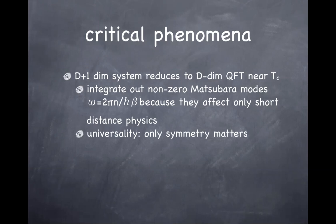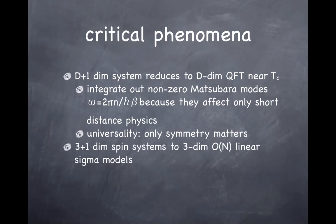There's a sense called universality: as you keep integrating out Matsubara modes, all the parameters in the theory keep changing, but at the end of the day the remaining theory in d dimensions respects the same symmetry you started with. So even though you integrate out infinitely many modes on the way to reaching the d-dimensional QFT, the end result is dictated by the symmetry of the system. That's why we end up with a Lagrangian that's useful and easy to deal with — this is how we use the O(N) linear sigma model for many different systems.